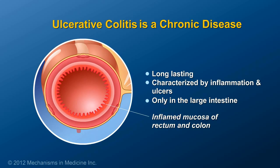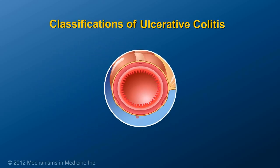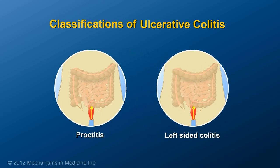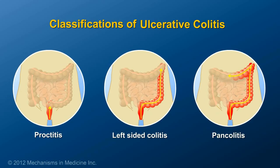Ulcerative colitis can be distinguished based on how much of the large intestine is involved. When ulcerative colitis involves only the rectum, it is referred to as proctitis. If the left side of the colon is involved, it is known as left-sided colitis. When the entire colon is involved, it is known as pancolitis.